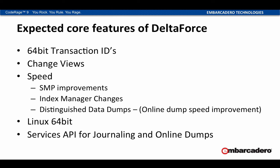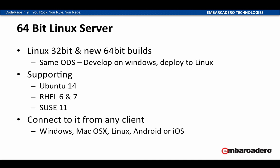Everything we've been doing on Delta Force is about improving speed. We've got an SMP improvement, index manager changes, and distinguished data dumps which speed up creation of read-only copies of the database. We're also providing 64-bit versions for Linux, and exposing additional APIs within the product for journaling and online dumps. With the 64-bit Linux server, we'll have binary-compatible database files between Windows and Linux, allowing you to develop on one machine and just copy to the target. We're looking to support Ubuntu 14, Red Hat Enterprise Linux 6 and 7, and SUSE 11.